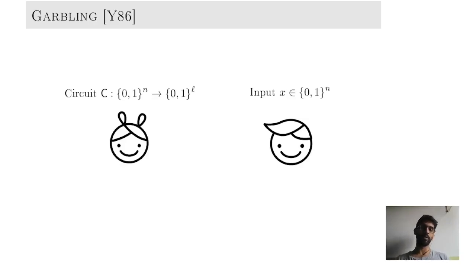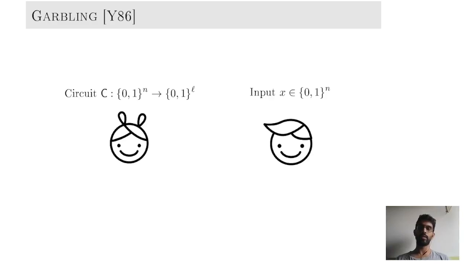Garbling was originally motivated by secure functional evaluation. Here we have a party Alice who holds a circuit C and another party Bob who holds an input X to this circuit. The circuit is from N bits to L bits and they want to jointly evaluate the circuit C on the input X. A trivial way to do this would be for Alice to simply send the circuit over to Bob or for Bob to send the input X to Alice. But what we would like is for the respective parties to not reveal their information — Alice does not want to reveal her circuit C, whereas Bob doesn't want to reveal his input X.